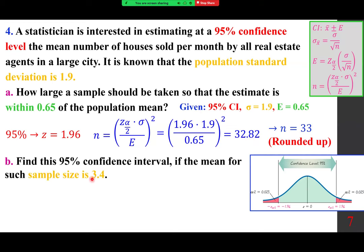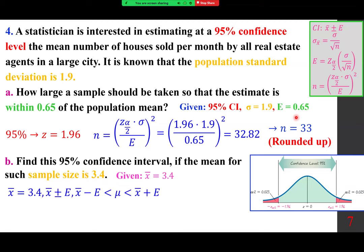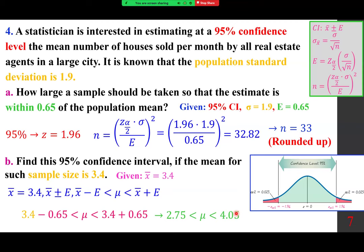Now find the 95% confidence interval if the sample mean for that sample size is x-bar = 3.4. The formula is x-bar plus minus E, where E = 0.65. So mu is between x-bar minus E and x-bar plus E, giving mu between 2.75 and 4.05. We are 95% confident that the true population mean is somewhere between those two numbers.